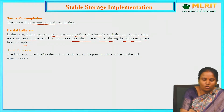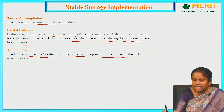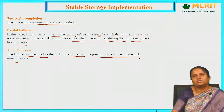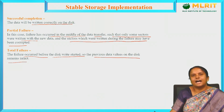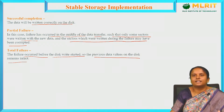What is total failure? The failure occurred before the disk write started, so the previous data values on the disk remain intact. Intact here means the write completely failed — whatever you were about to insert or write, when starting, the previous data values on the disk remain in a corrupted or unchanged state. This is what total data failure means.